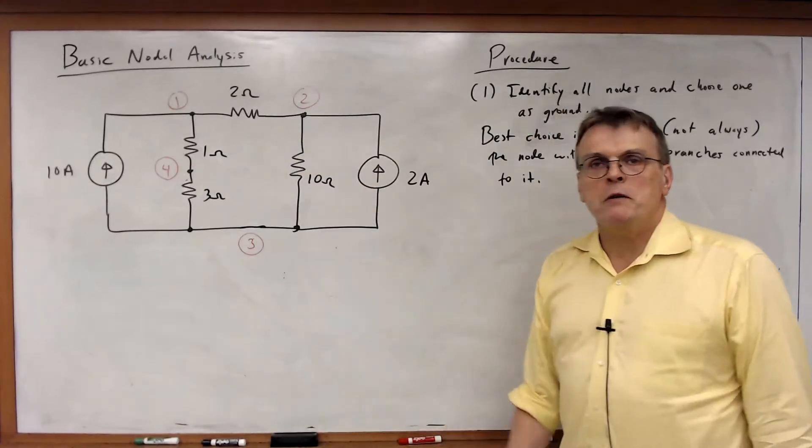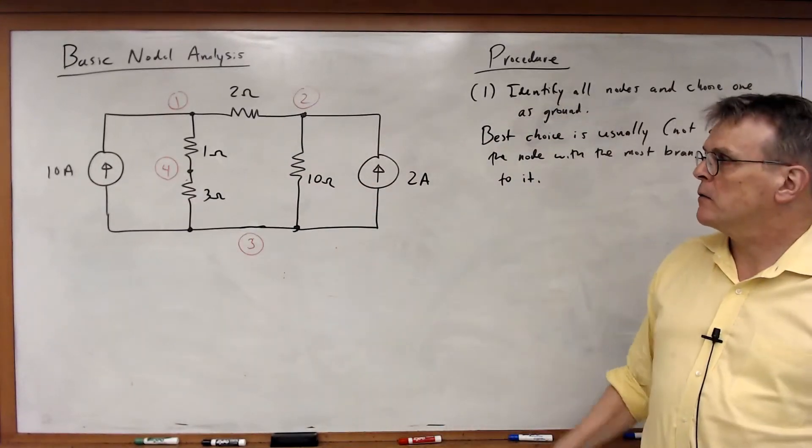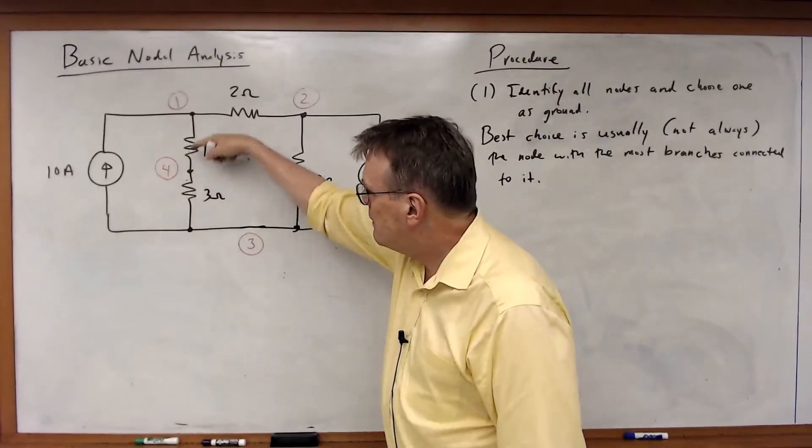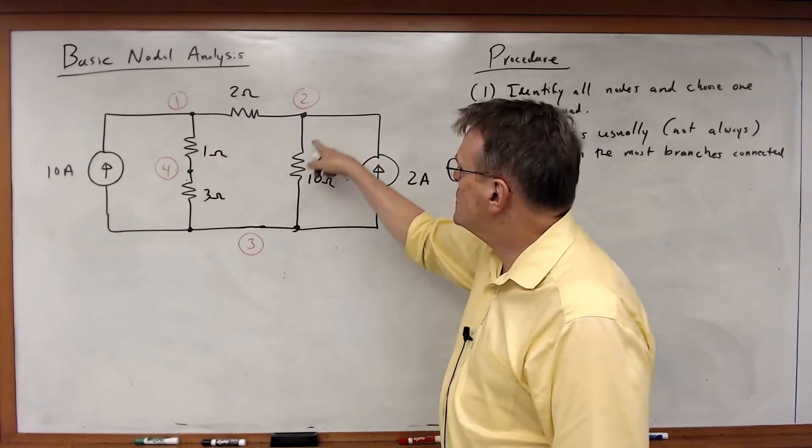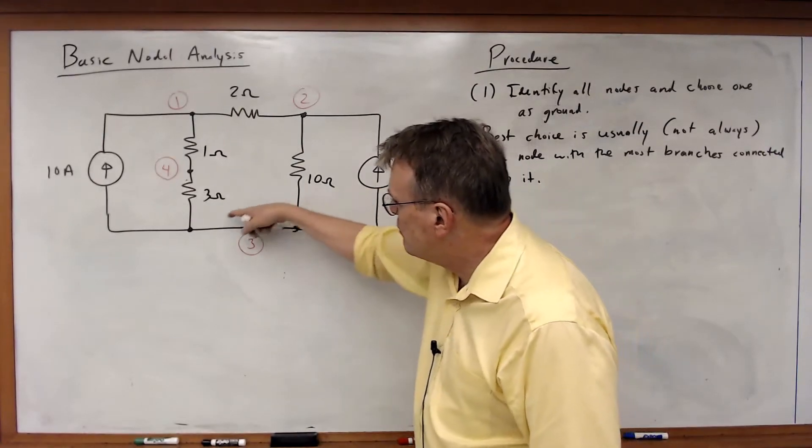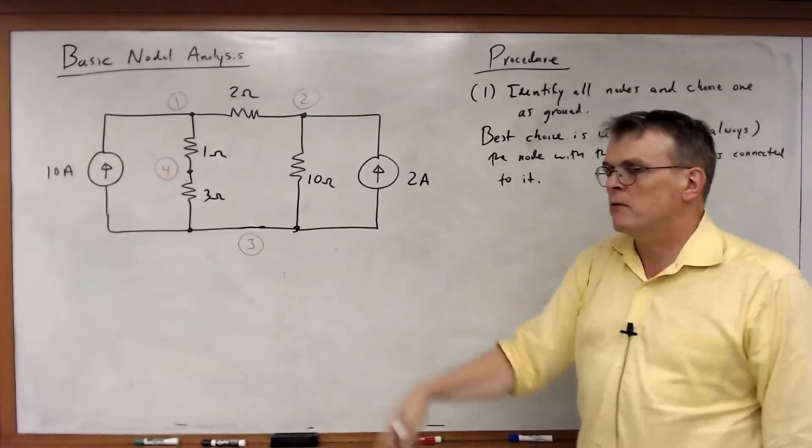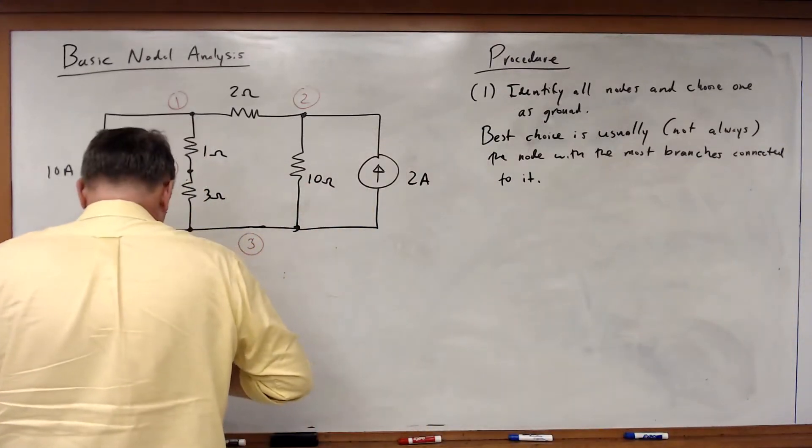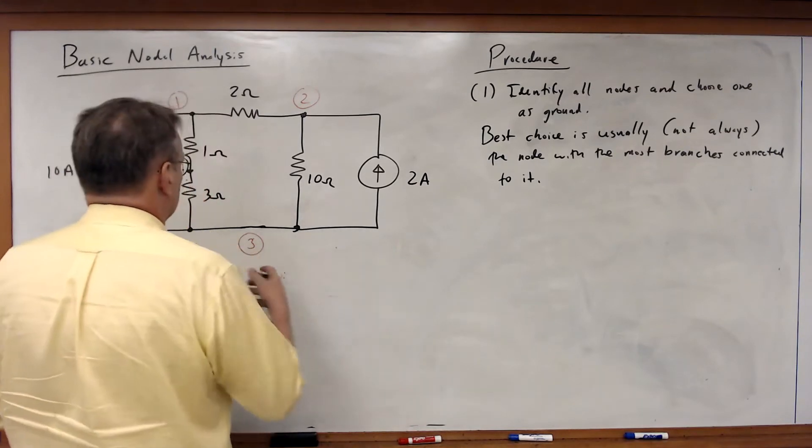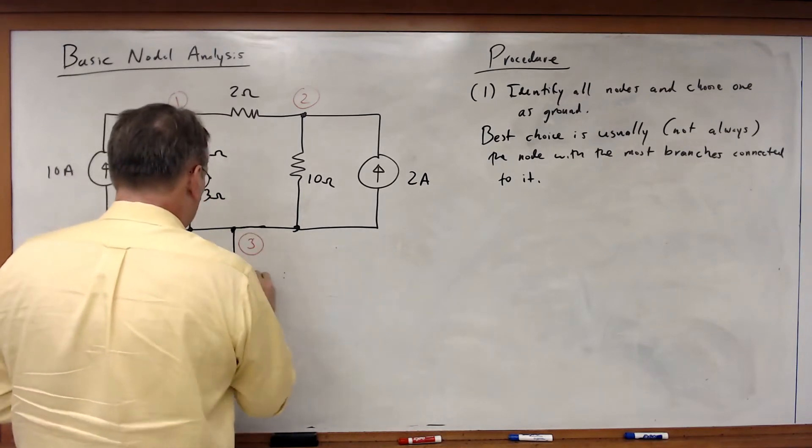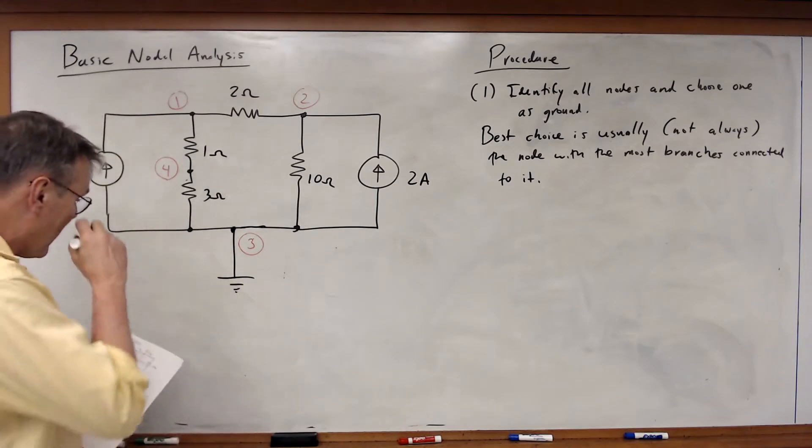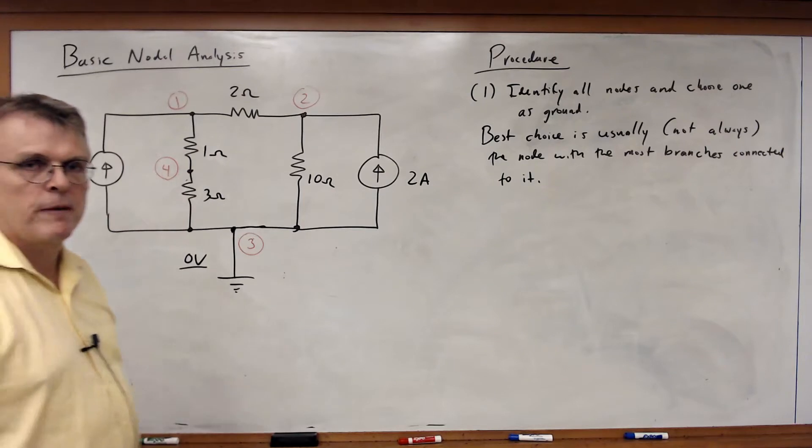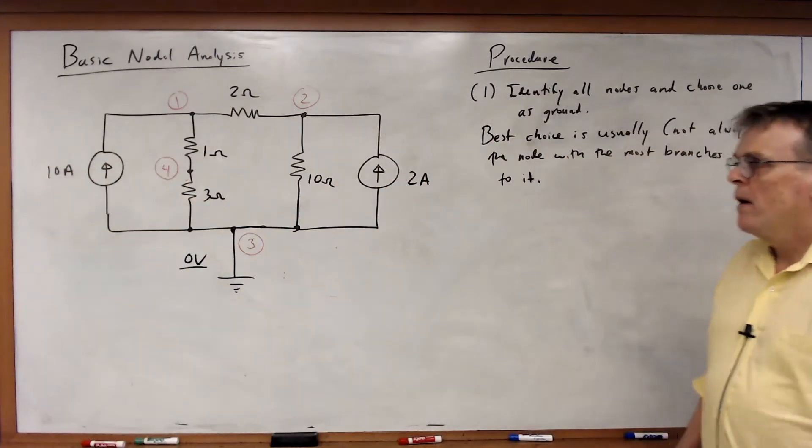So I look at this and I say, which node is the best choice for ground? Which node has the most number of branches connected? This one's got three, this one has two, this one has three, this one has one, two, three, four. So node number three has four branches. In that case, I'm going to pick that as ground. Node three becomes ground and by inspection, it has a node voltage of zero volts. I just declare that.